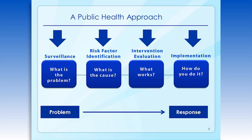Regardless of the topic, we take the same approach to public health problems by following four general steps. We start by asking: what is the problem, or even, is there a problem? In public health, we identify the problem by using surveillance systems to monitor health events and behaviors occurring among the population. After we've identified the problem, the next question is: what's the cause of the problem? For example, are there factors that might make certain populations more susceptible to disease, such as something in the environment, or certain behaviors that people are practicing that put them at risk?